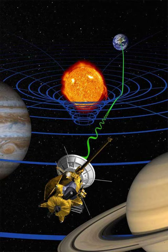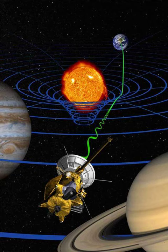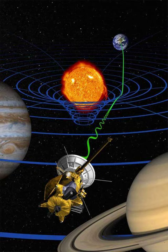Third test: gravitational redshift was first measured in a laboratory setting in 1959 by Pound and Rebka. It is also seen in astrophysical measurements, notably for light escaping the white dwarf Sirius B. The related gravitational time dilation effect has been measured by transporting atomic clocks to altitudes of between tens and tens of thousands of kilometers, first by Hafele and Keating in 1971, and more accurately by Gravity Probe A launched in 1976. Of these tests, only the perihelion advance of Mercury was known prior to Einstein's final publication of general relativity in 1916. The subsequent experimental confirmation of his other predictions, especially the first measurements of the deflection of light by the Sun in 1919, catapulted Einstein to international stardom. These three experiments justified adopting general relativity over Newton's theory and over a number of alternatives to general relativity that had been proposed.